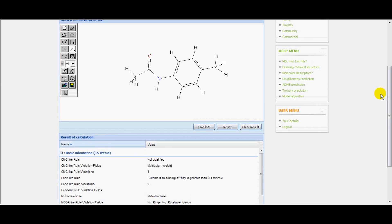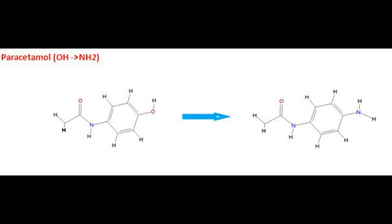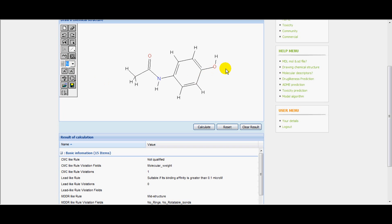Again we are editing the paracetamol OH group with NH2 group. Click to calculate. Here the CMC-like rule, lead-like rule and MDDR-like rule have violations. Copy the result to the document.